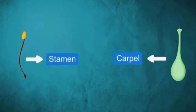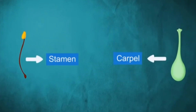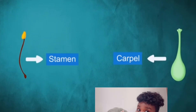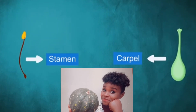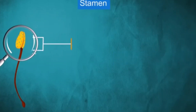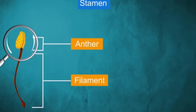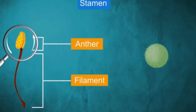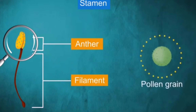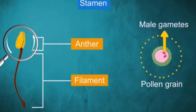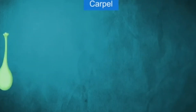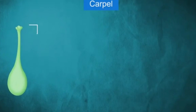Let's get into the interesting parts that make up the stamen and the carpel, and then show you how it all comes together to form that fruit. The stamen is made up of two parts: the anther and the filament. The anther produces pollen grains, and these pollen grains contain what we call the male gametes.